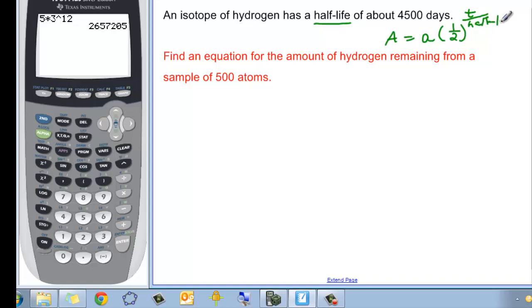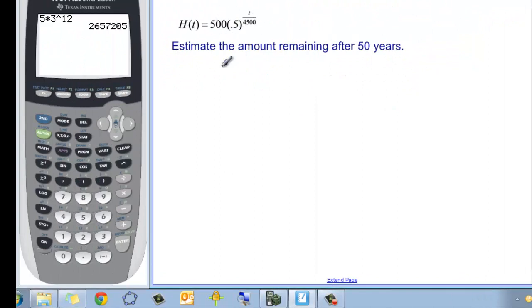How often does it happen? Well, the half-life would be how often halving happens. So find an equation for this situation where we have hydrogen with a half-life of 4,500 days, and we want to know how many are going to be remaining with a sample of 500. So we have a is equal to starting with 500 hydrogen atoms, and we have half that's going to happen every t divided by 4,500. And I put it as 0.5 because that'll be easier to put in my calculator.